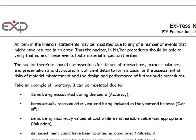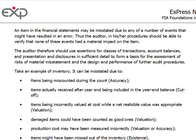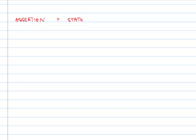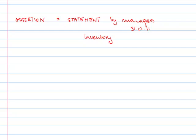An assertion is a certain statement made by the managers — assertion equals a statement by managers. Let's take the example of inventory and let's say that at the 31st of December 2011, the inventory in the financial statements is stated at $5 million.